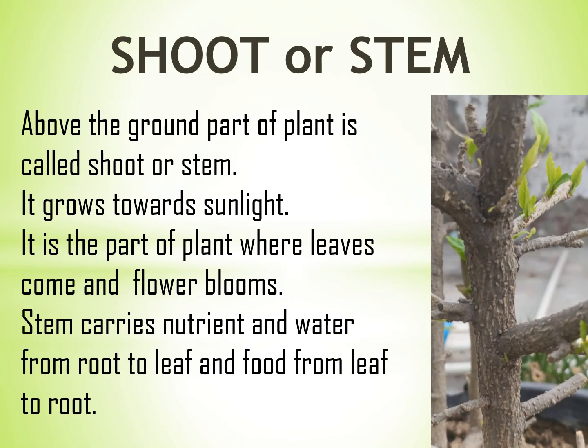Shoot or Stem. The above-ground part of a plant is called shoot or stem. It grows towards sunlight. It is the part of the plant where leaves grow and flowers bloom. Stem carries nutrients and water from root to leaf, and food from leaf to root.